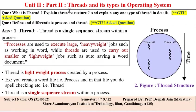Let's see the threads and their types in operating systems. There are two types of GTU exam questions here. First: 'What is thread? Explain thread structure and explain any one type of thread in detail' — this was asked for 7 marks. Second: 'Define and differentiate process and thread' — asked for 4 marks. Both questions are very important and cover almost half of the thread topic.